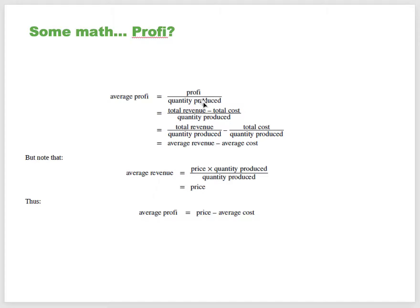Average profit is profit divided by quantity produced: total revenue minus total cost, divided by quantity produced—which simplifies to average revenue minus average cost. Since average revenue equals price times quantity divided by quantity, it's just the price. So average profit equals price minus average cost.